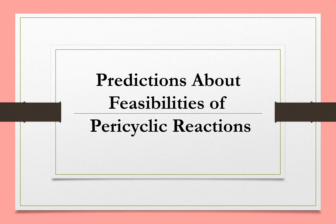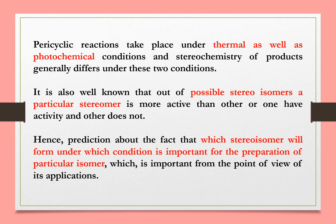In this video, we are discussing the predictions about feasibility of pericyclic reactions. Pericyclic reactions take place under thermal as well as photochemical conditions. These reactions are stereospecific, and the stereochemistry of products generally differs under these two conditions.